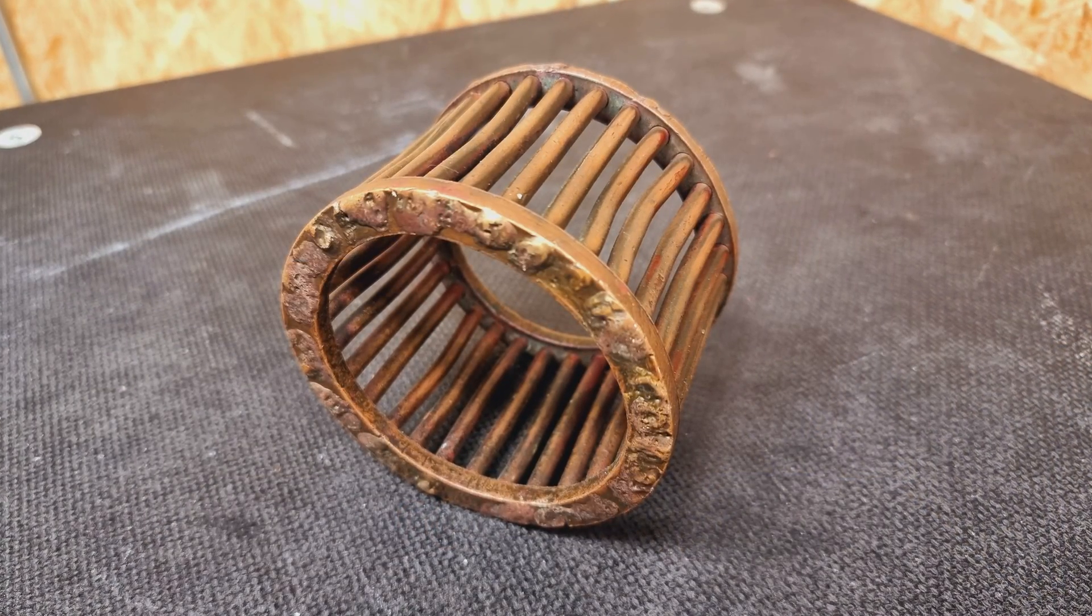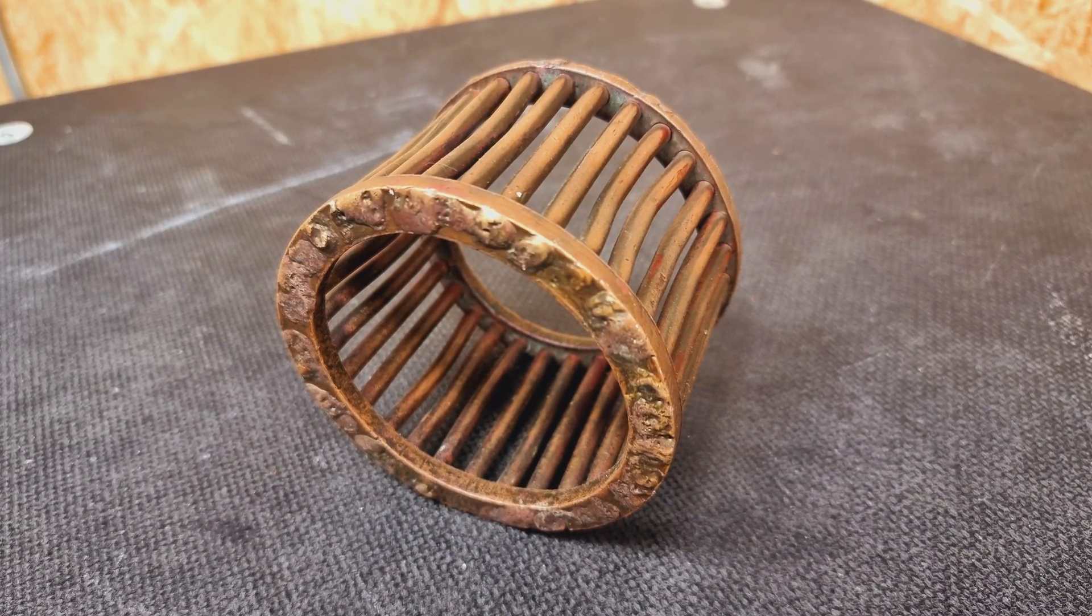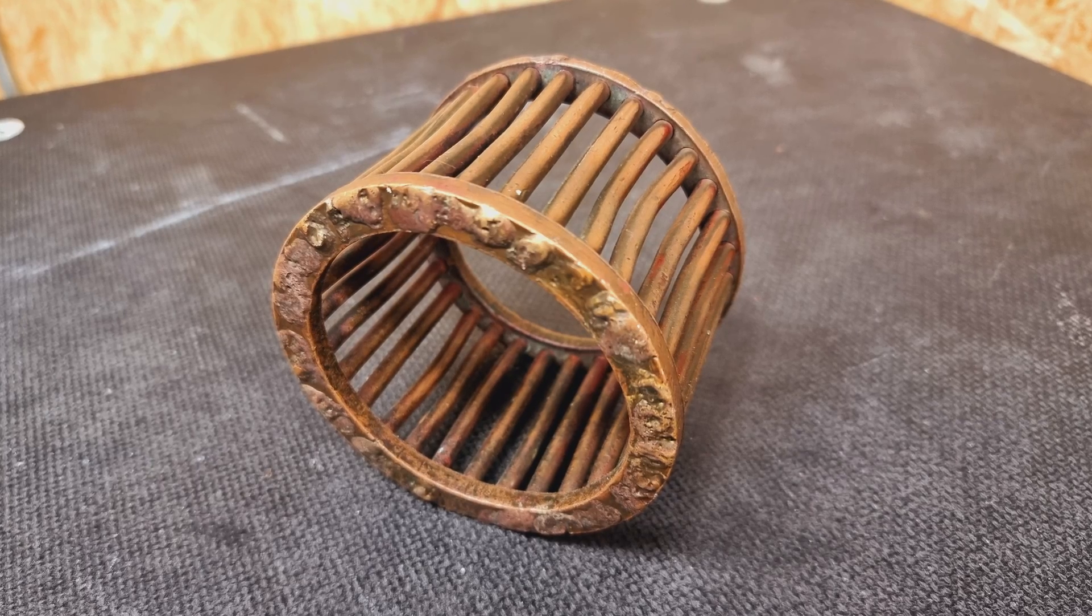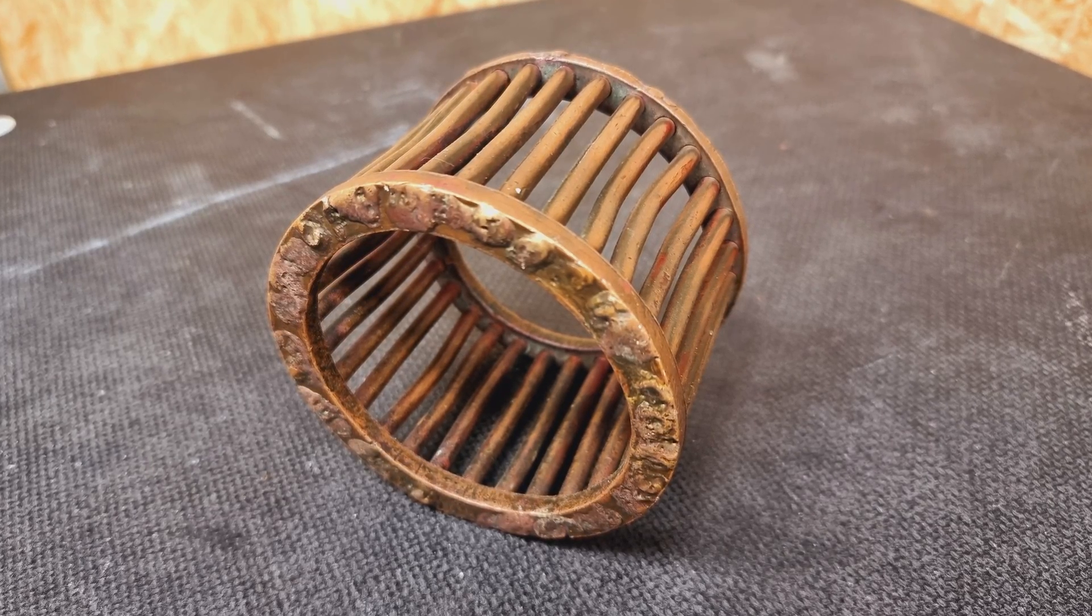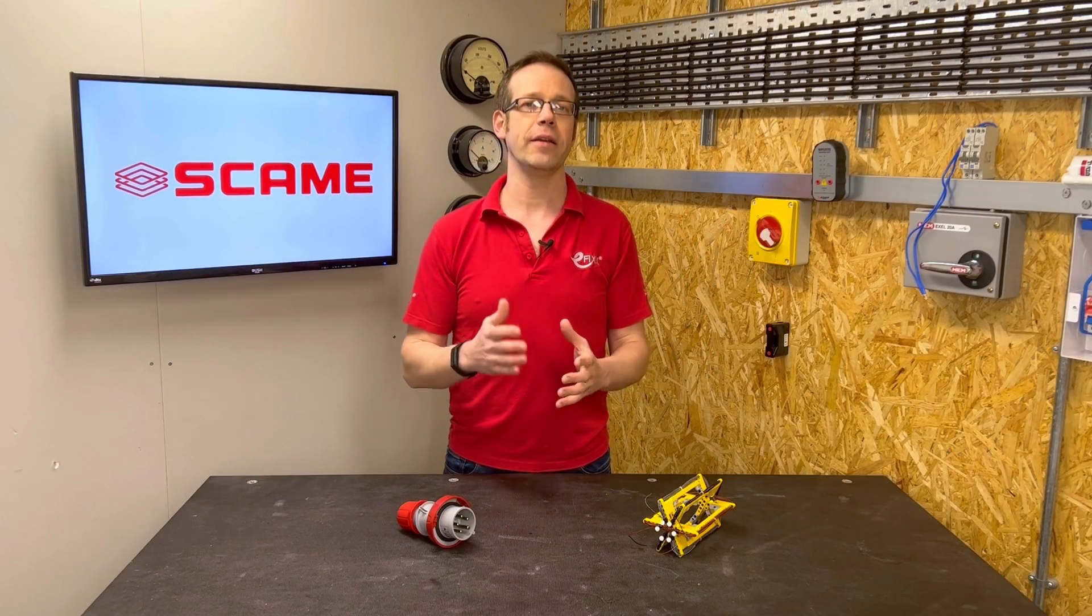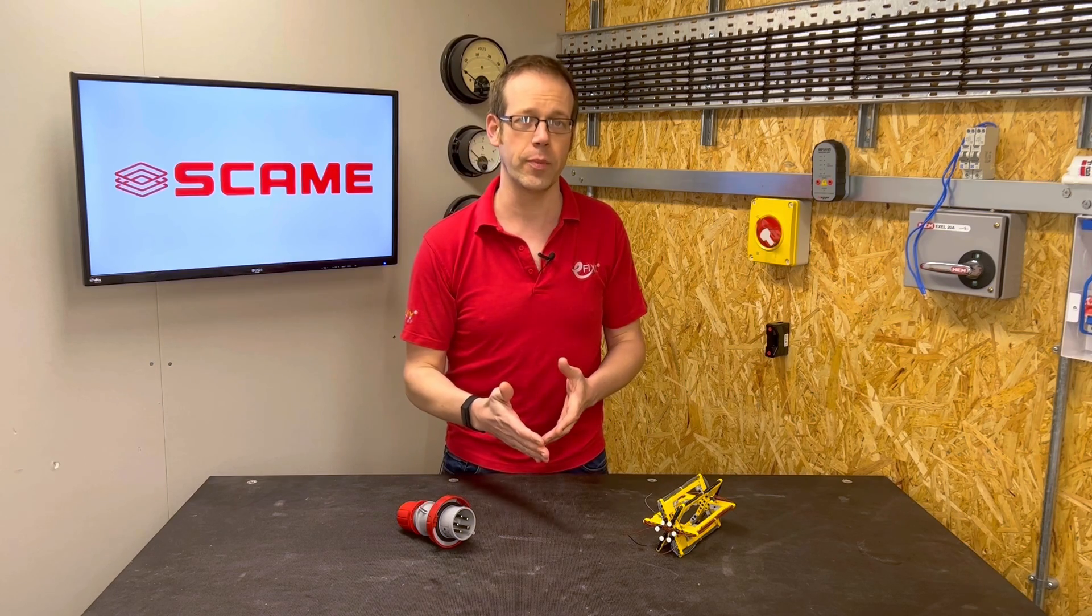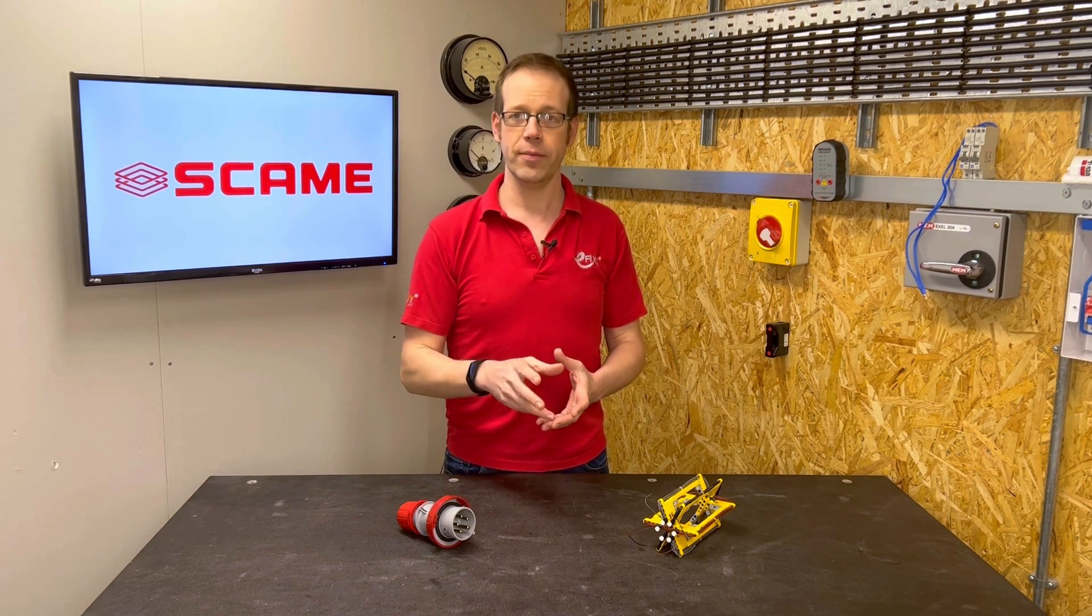Now inside the motor sits what's referred to as a squirrel cage and again we're not going to dive too deeply into how this works now. The basic principle is that the rotating magnetic field cuts across the conductive copper bars in the squirrel cage and generates a current in them.